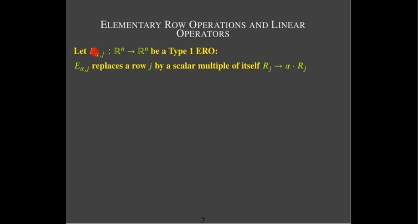Capital E — normally we've been using a T, but since it's an elementary row operation, we're using capital E instead of capital T to represent a transformation. A transformation has to have two properties in order to be a linear transformation, and since we're going from the same space to the same space, it's going to be a linear operator. The first property is additivity.